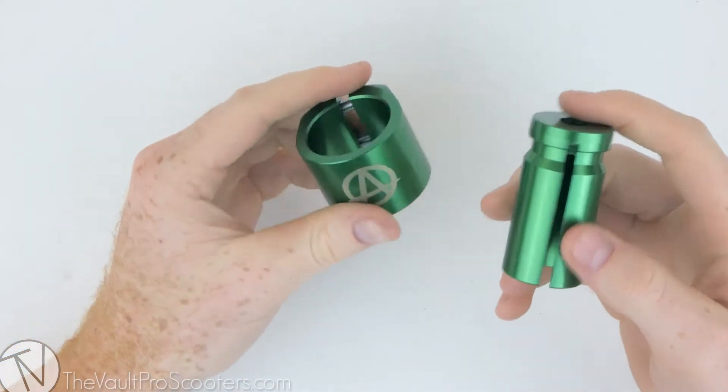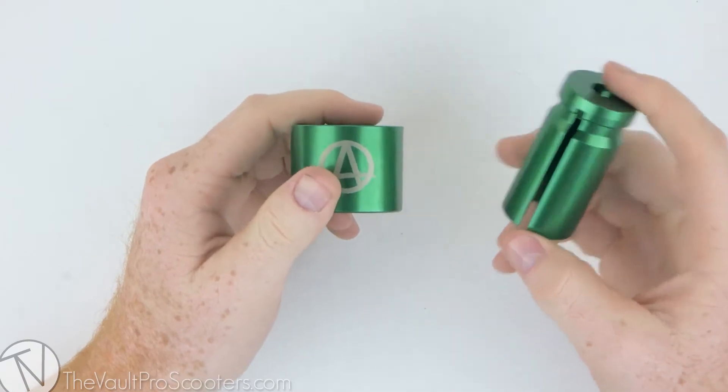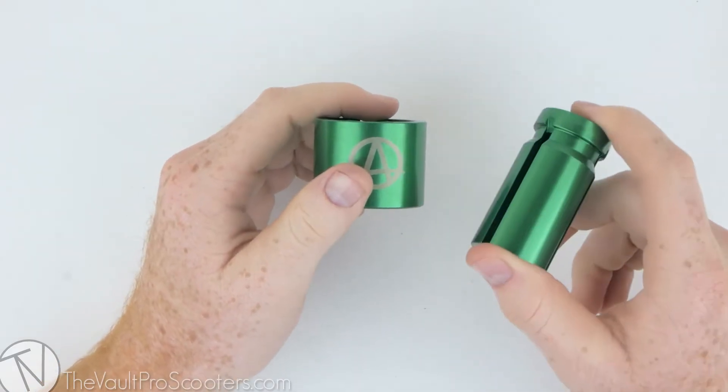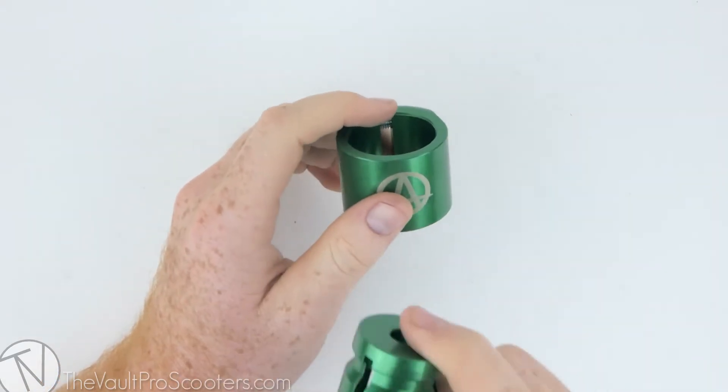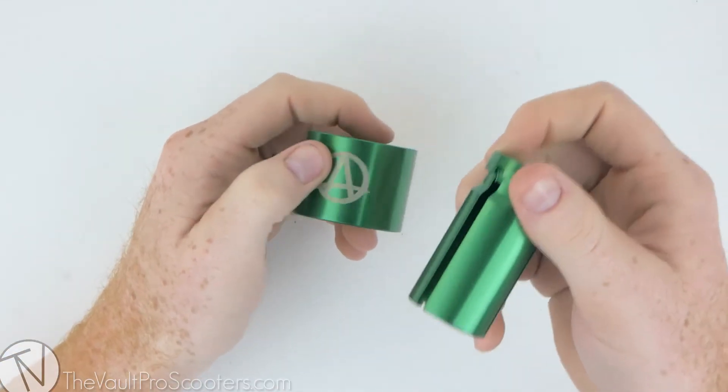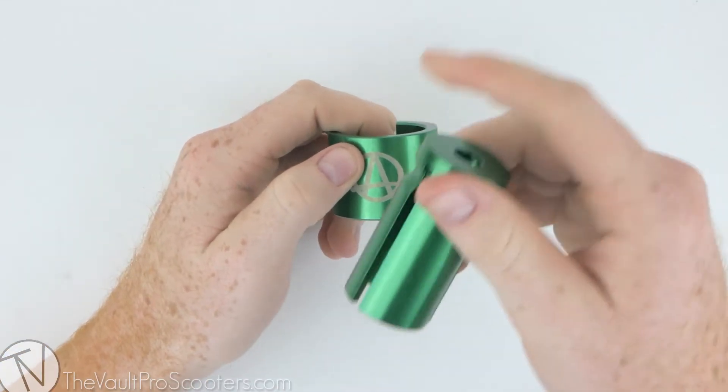And as usual with Apex products this thing does come in a few different colors. We have black, blue, green, purple, rock, and red. And of course the shim matches the clamp color. That's awesome. Can't stress that enough.